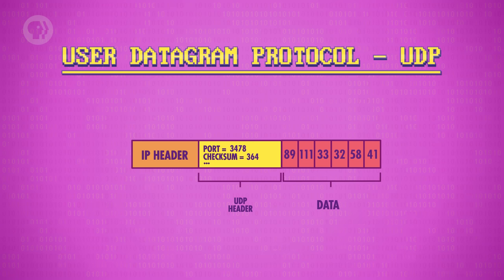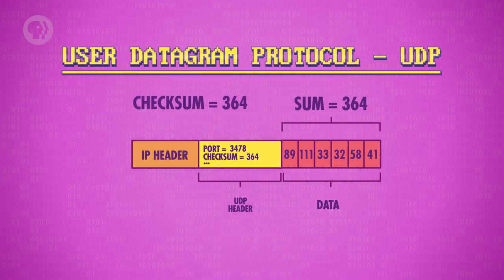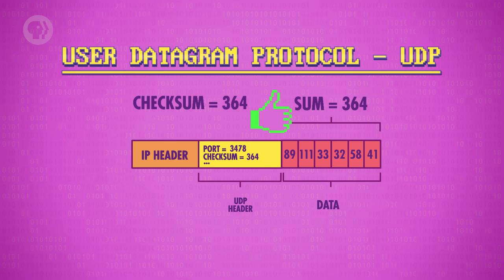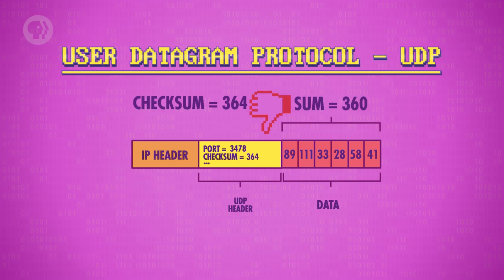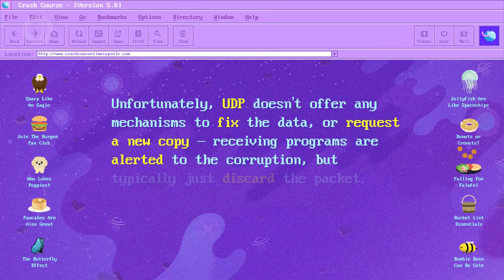When the receiving computer gets this packet, it repeats the process, adding up all the data. If that sum is the same as the checksum sent in the header, all is well. But if the numbers don't match, you know that the data got corrupted at some point in transit, maybe because of a power fluctuation or faulty cable. Unfortunately, UDP doesn't offer any mechanisms to fix the data or request a new copy. Receiving programs are alerted to the corruption, but typically just discard the packet.